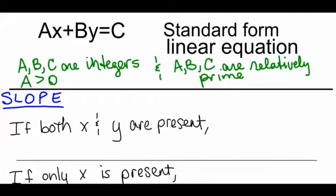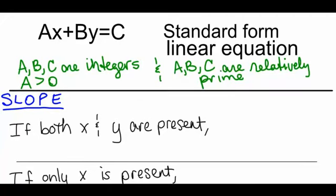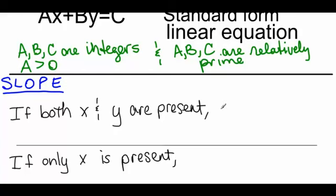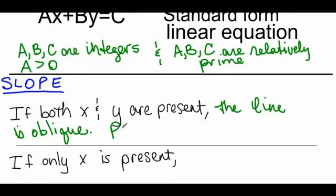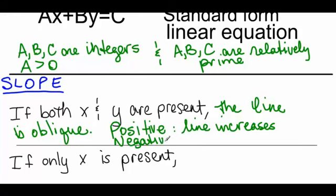For slope, we've studied this. The slope, if both x and y are present in the equation, then the line is oblique. Remember, oblique means slanted. The slope will either be positive, and if it is, the line increases from left to right, or the slope will be negative. If it is negative, the line decreases from left to right. And that's something that we look for when we analyze our graphs.